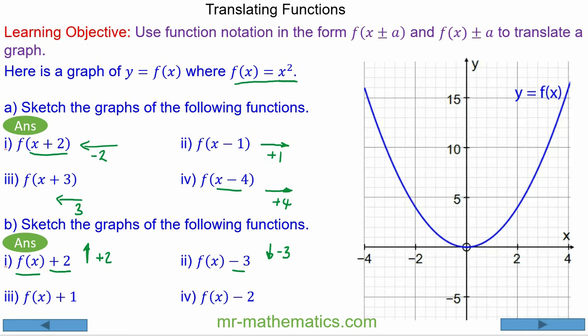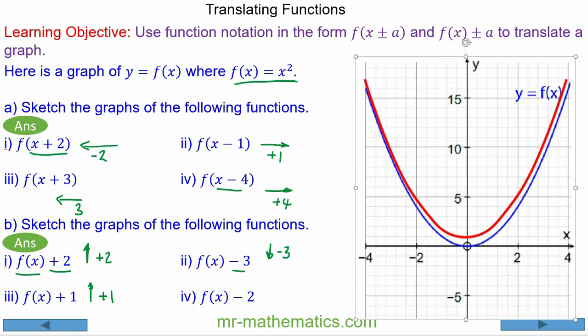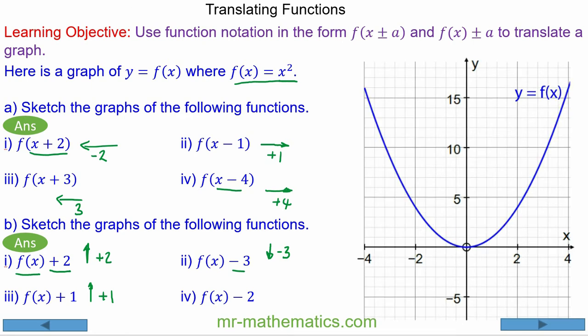For question 3, we're going to perform a vertical translation of positive 1 unit. You can see the function has been moved vertically upwards, so the y value is now at 1 for the turning point.